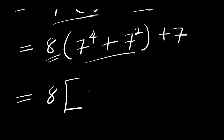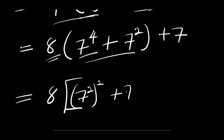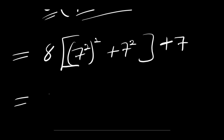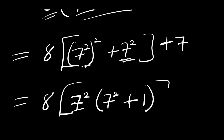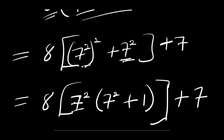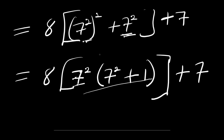Now the next thing we are going to do is we can further split this down. We can have 8 times, using square brackets, and rewrite this as 7 power 2 squared plus 7 power 2, then plus 7. So what next can we do? The next thing is to factor out 7 power 2, because we have it here and here. So we have 8 times 7 power 2 times another 7 power 2 plus 1, then that's the end of the bracket, plus 7. Definitely if you multiply this out you will get what we had right here.